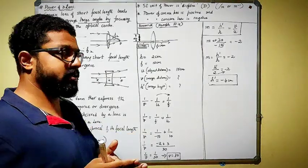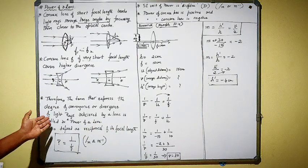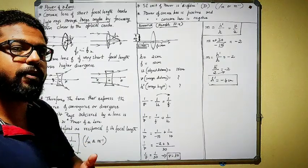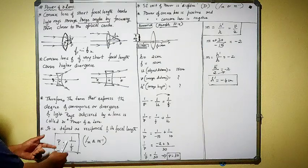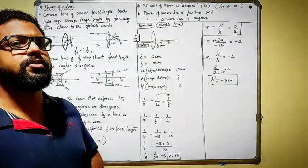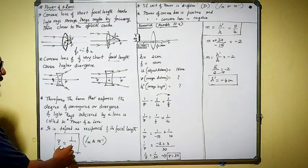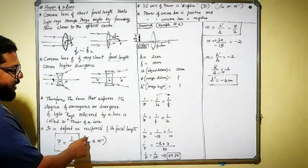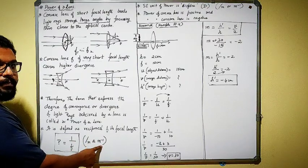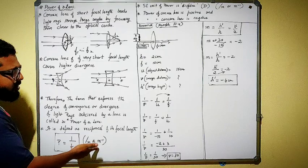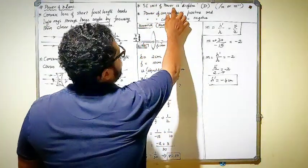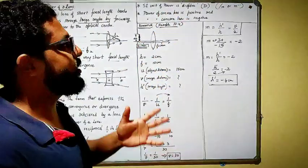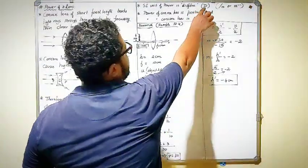Power of a lens is the term that expresses the degree of convergence or divergence of light rays achieved by a lens. The formula for power of a lens is P = 1/f, that is the reciprocal of the focal length. Since the SI unit of focal length is meters, the SI unit of power is 1/meter or meter⁻¹. The standard unit for power of a lens is called the Diopter, represented by capital D.